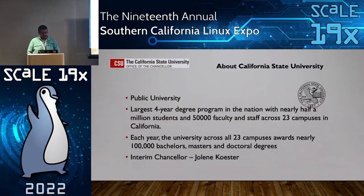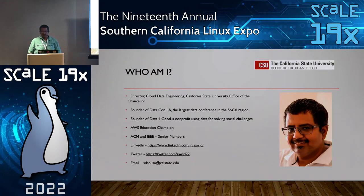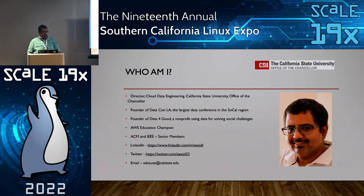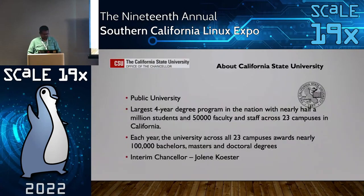So who am I? I'm the Director for Cloud Data Engineering at the Cal State University Office of the Chancellor. I'm also the founder of Data Connelly, which is the largest data conference in the SoCal region — the conference is in just two weeks, August 13th at USC. I'm also a founder of Data for Good, a nonprofit using data for solving social challenges. I was recently awarded the AWS Education Champion Award and I'm going to Seattle next week to receive it. I'm also a senior member of ACM and IEEE.